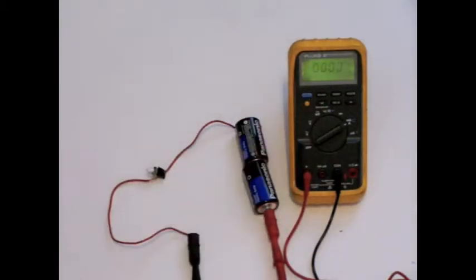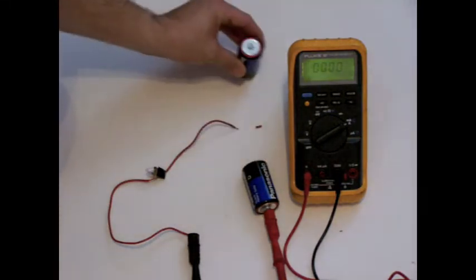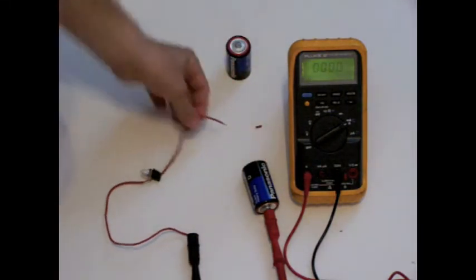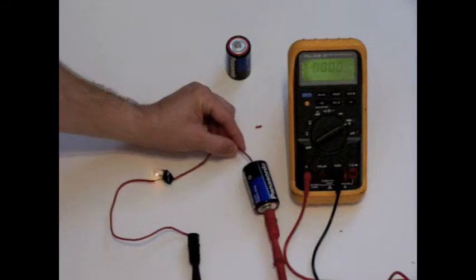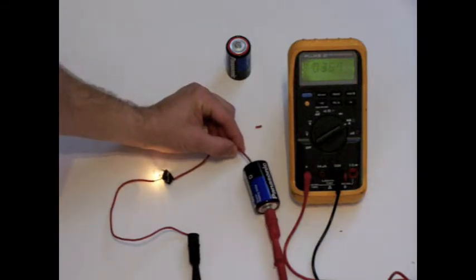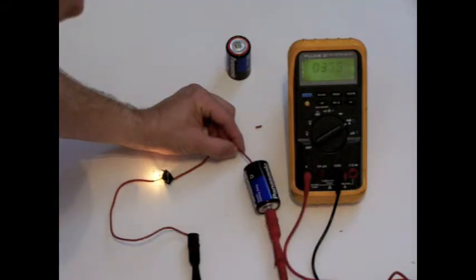I'm going to light that up so you can see it a little bit better. With one battery, when we touch and complete the circuit, you'll see the light bulb light up, and you'll see the current is going to come to about 370 milliamps.